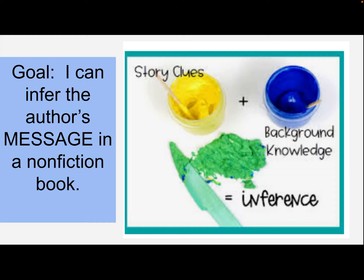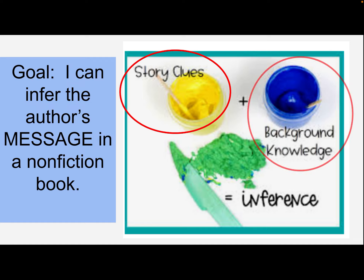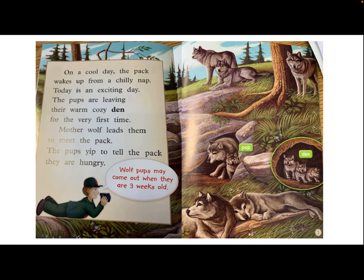Before we can really take a look at this, we need to make sure that we understand what it means to infer. When we infer or make an inference, we think about story clues — things that the author has told us or included in pictures. We also think about our own background knowledge: what do we already know about the topic? We put these together and we can make an inference.